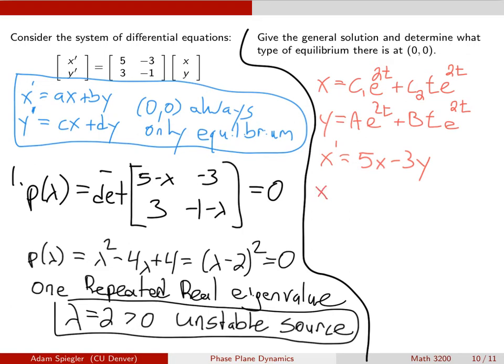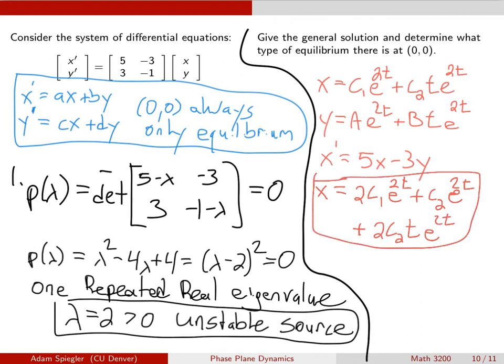In order to do that, you would need to figure out that x prime is equal to 2c1 e to the 2t plus c2 e to the 2t plus 2c2 t e to the 2t. And so you take all of this stuff, you plug it in for x.